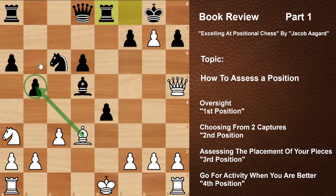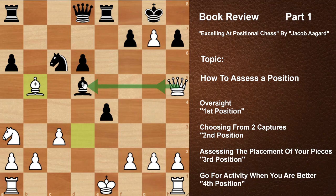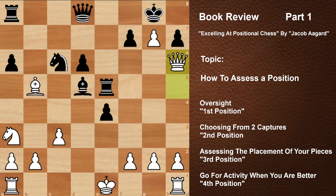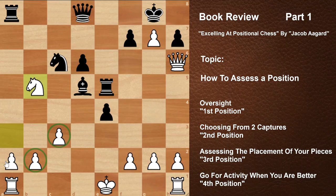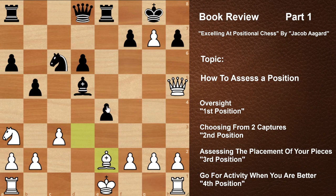I want you to find the best defense for Black in this position and understand why taking on b5 was a mistake. This was actually played in the game. After bishop takes b5, White thought he was picking up the bishop, but now Black's bishop was free. Black's defense was rook e5 — the queen has to move. After queen h6, Black takes on b5, and although White has pawn majority, Black's pieces become too active.